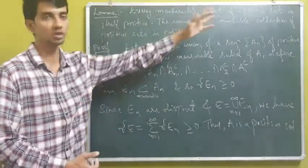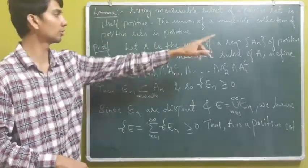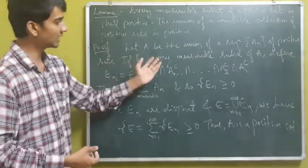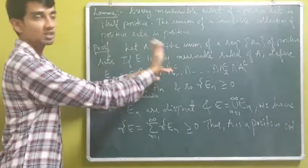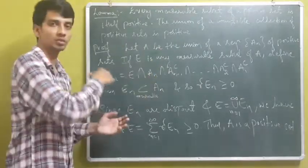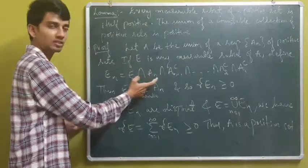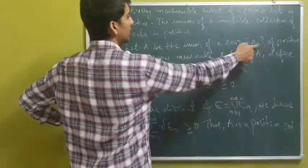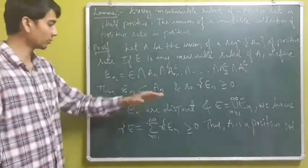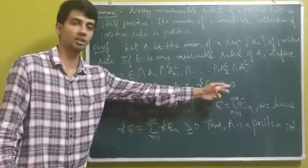To prove the union of a countable collection of positive sets is positive, let A be the union of a sequence {A_n} of positive sets. If E is any measurable subset of A, define E_n to be E intersected with A_n intersected with the complements of all previous elements of the sequence. Clearly, E_n is a measurable subset of A_n, so the signed measure of E_n is greater than or equal to zero.